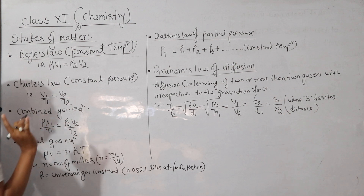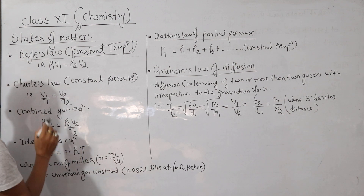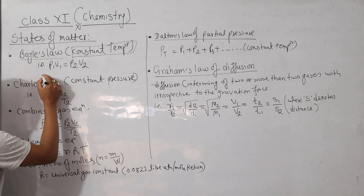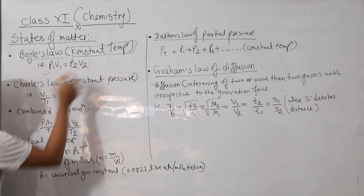Temperature is constant, so we have to get a point to the point. In the derivative method, what is this formula? P1...